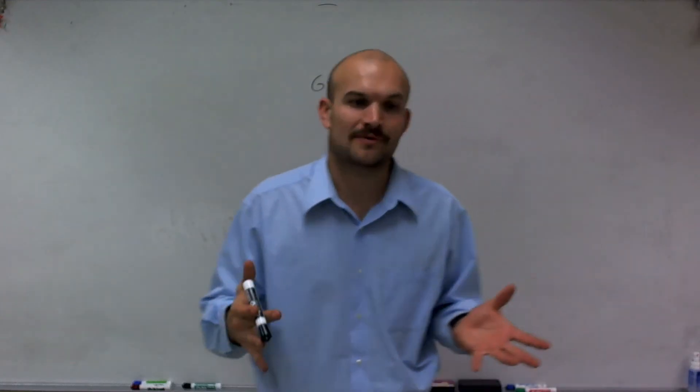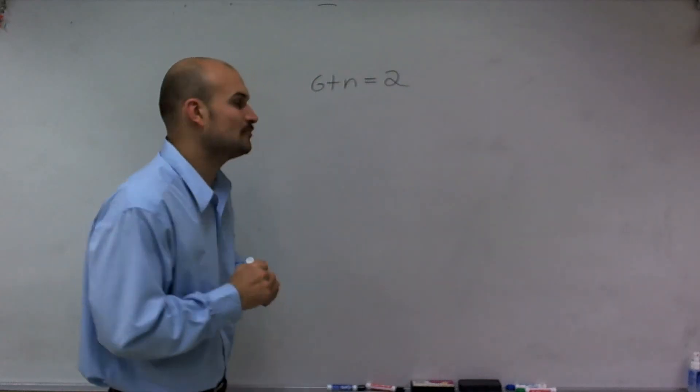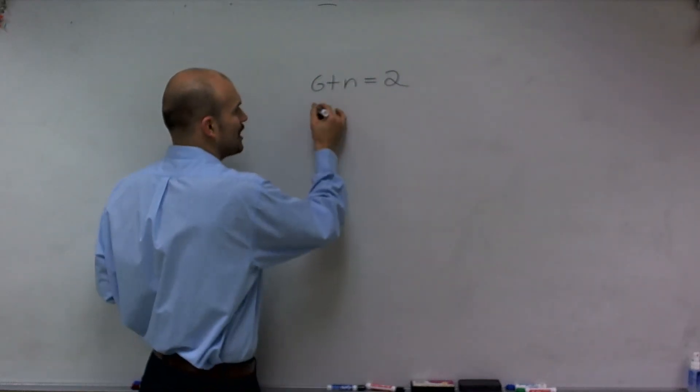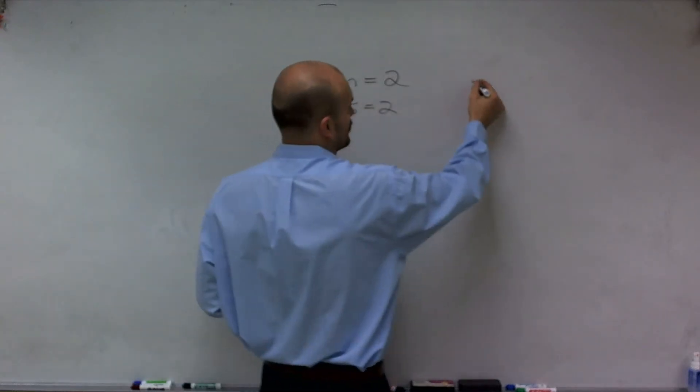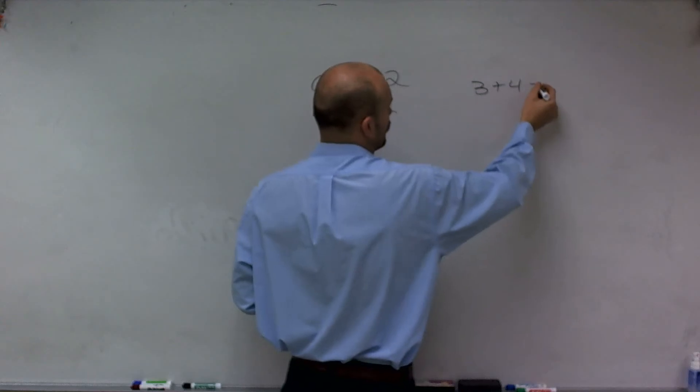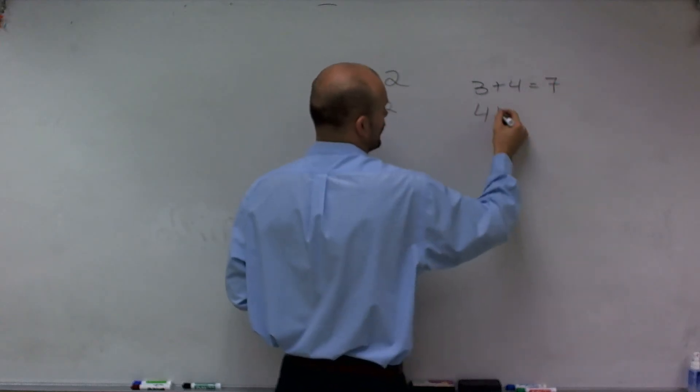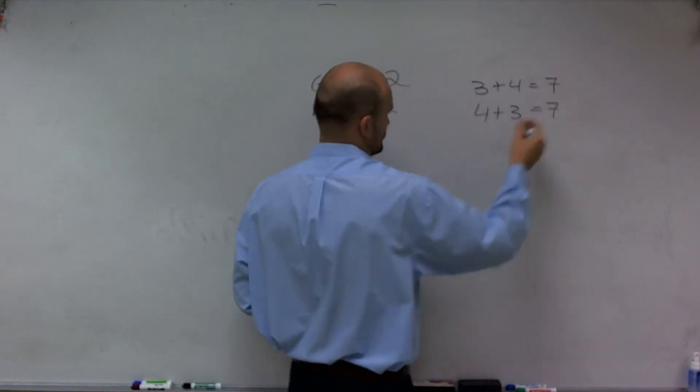So what we can do to help us out is use the commutative property of addition and rewrite this problem as n plus 6 equals 2. The reason I can do this is simple. 3 plus 4 we know is equal to 7, as well as 4 plus 3 equals 7, right?